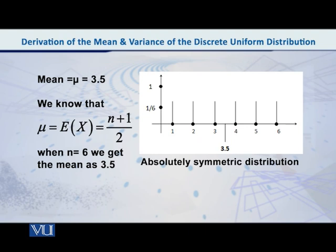3.5, the point on the x-axis, if you place a mirror there, you can see that the left hand side of the distribution is the mirror image of the right hand side.